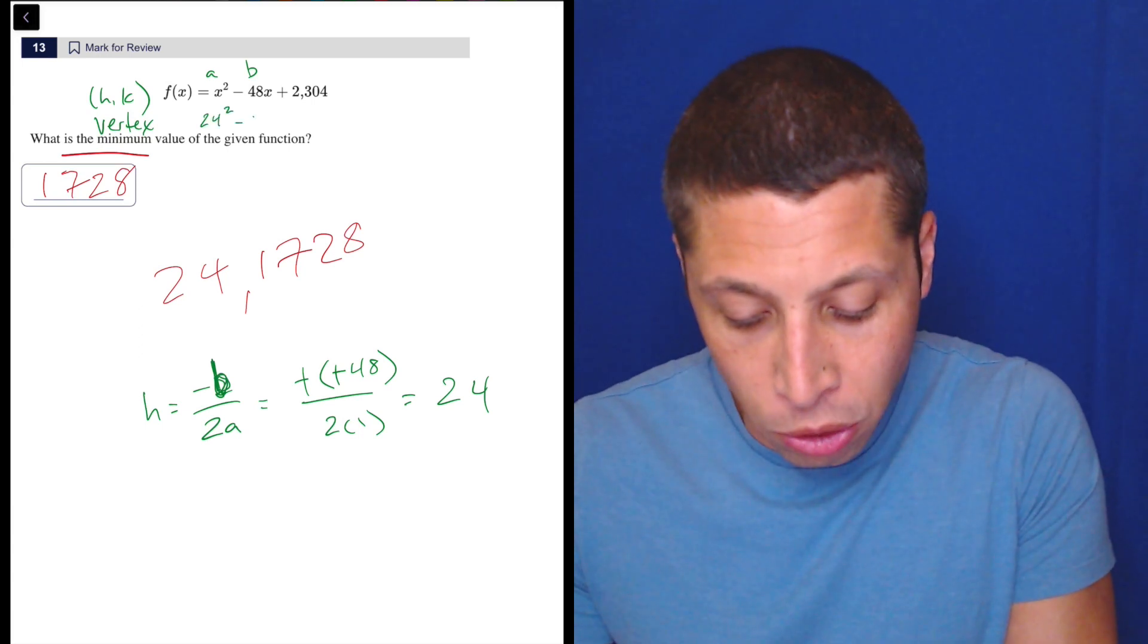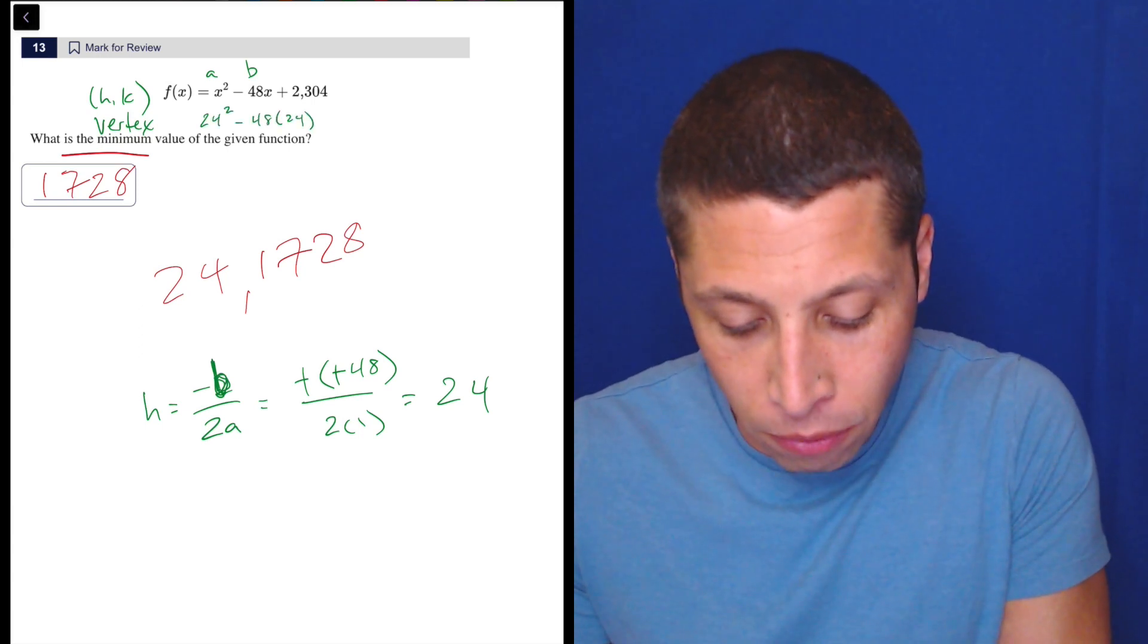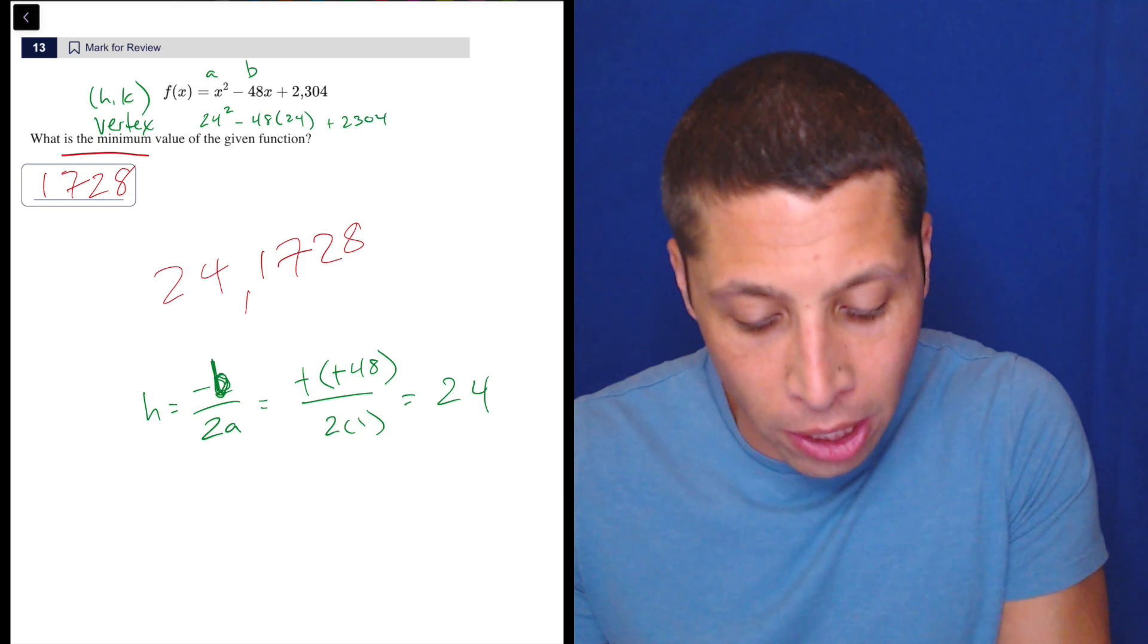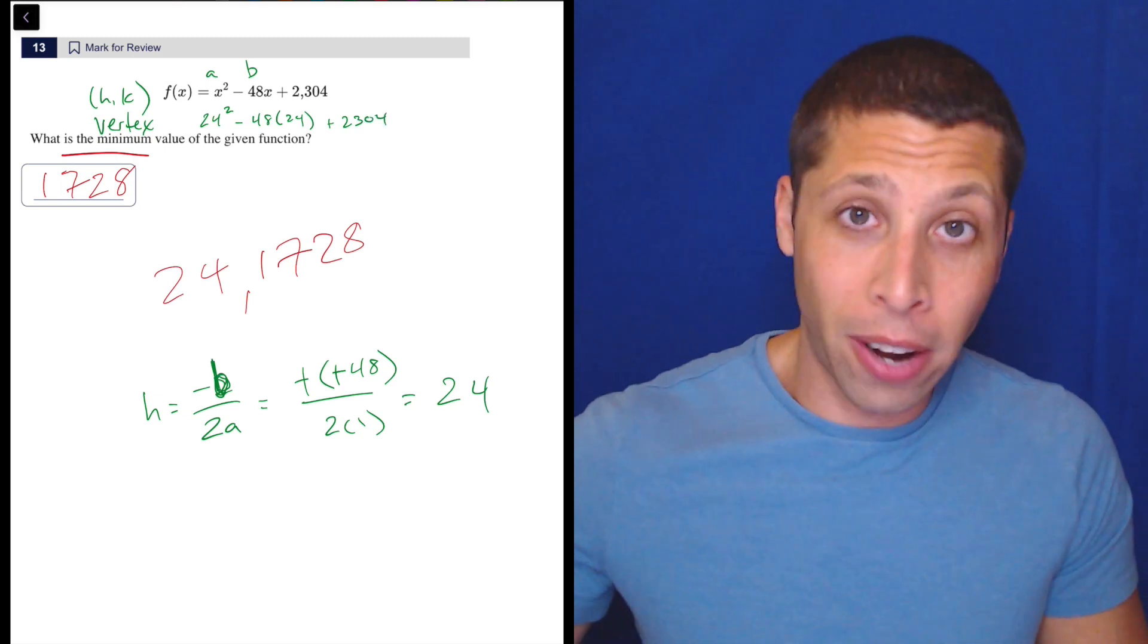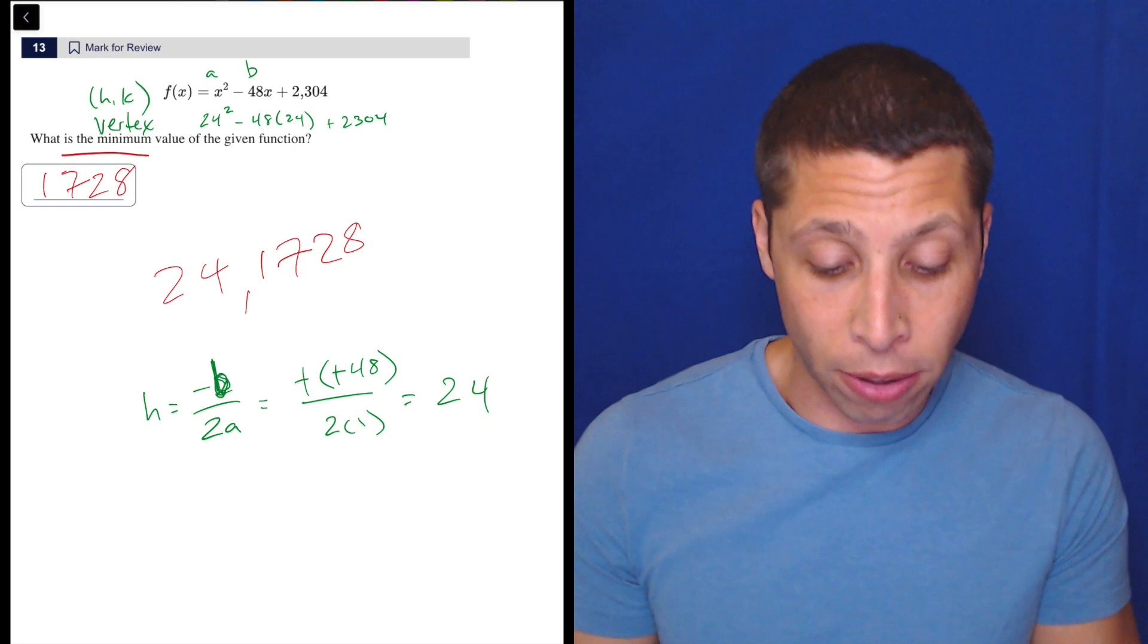So we're going to need to do 24 squared minus 48 times 24 plus 2304. So I don't know, we're kind of using the calculator anyway. We could put all of that into this calculator.